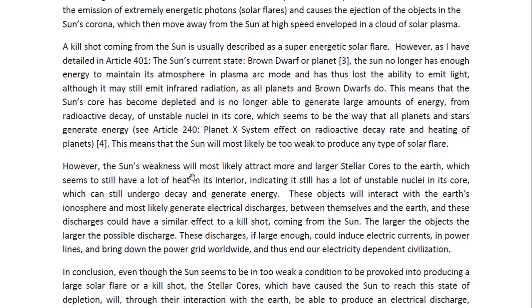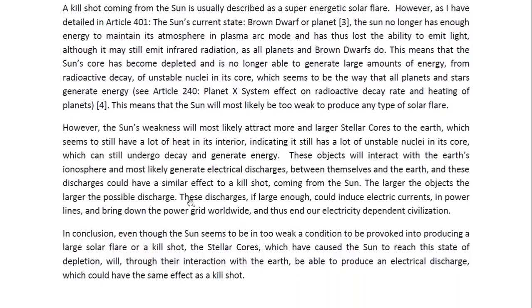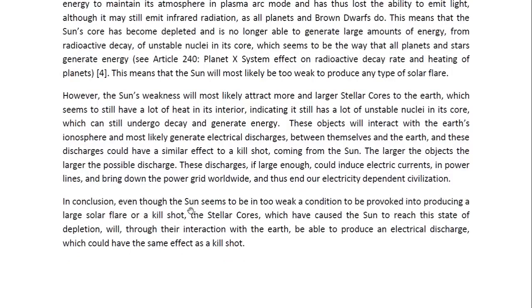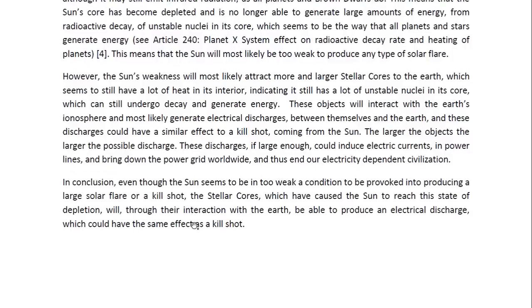This means that the sun will most likely be too weak to produce any type of solar flare. However, the sun's weakness will most likely attract more and larger stellar cores to the Earth, which seems to still have a lot of heat in its interior, indicating it still has a lot of unstable nuclei in its core which can still undergo decay and generate energy. These objects will interact with the Earth's ionosphere and most likely generate electrical discharges between themselves and the Earth. These discharges could have a similar effect to a kill shot coming from the sun. The larger the objects, the larger the possible discharge. If large enough, these discharges could induce electric currents in power lines and bring down the power grid worldwide, ending our electricity-dependent civilization.